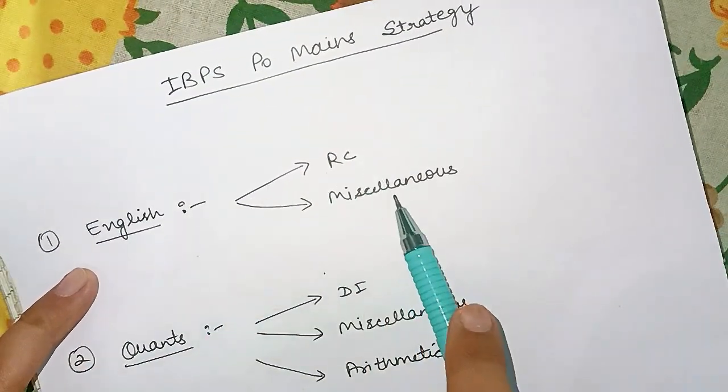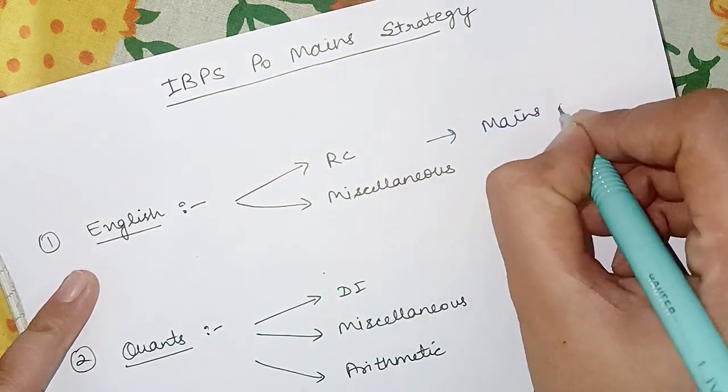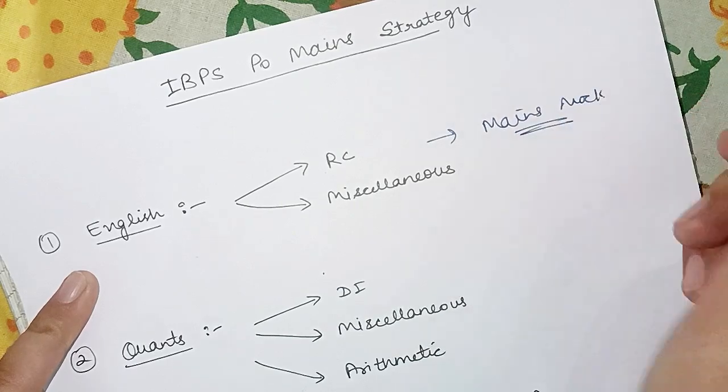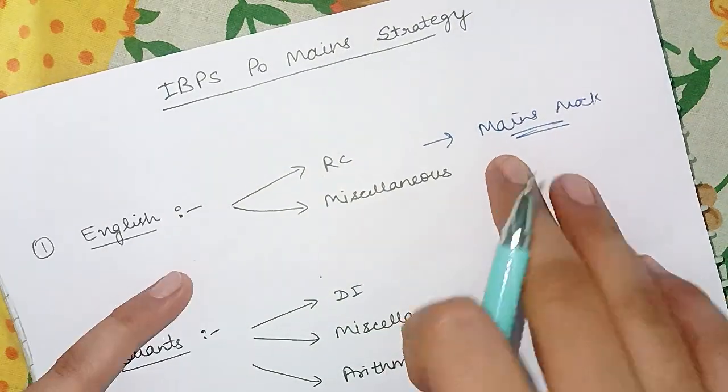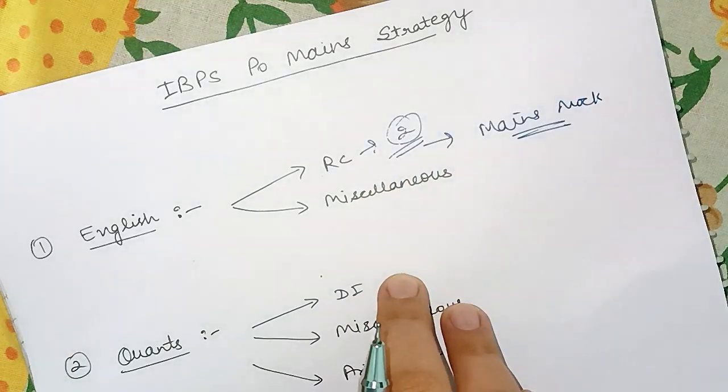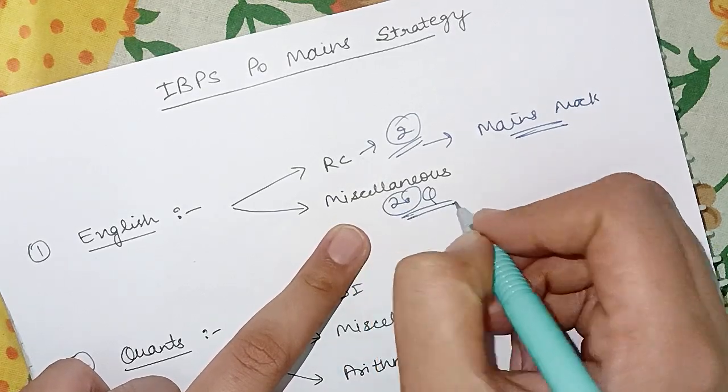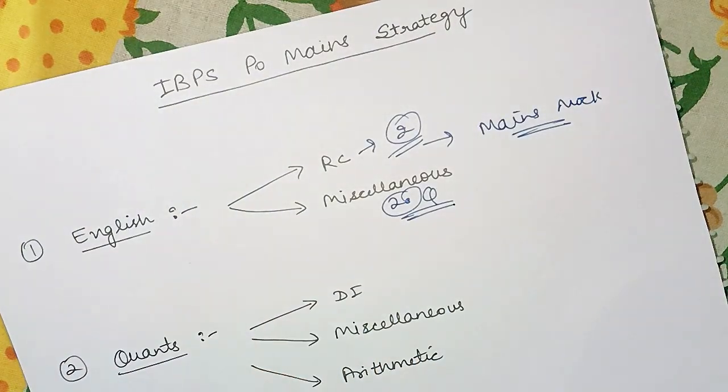Now we will start the video. First there is English, and then there is RC and miscellaneous. I suggest you should use the mains mock test. From the mains mock test, try to attempt at least two mains level RCs on daily basis and then I used to do around 20 questions of miscellaneous on daily basis.